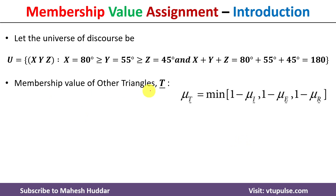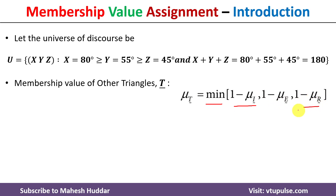Finally, the membership value of other triangles — fuzzy set T — is always equivalent to the minimum of: (1 minus the membership value of the isosceles triangle), (1 minus the membership value of the equilateral triangle), and (1 minus the membership value of the right angle triangle).